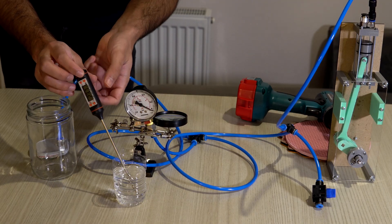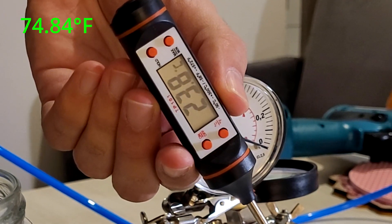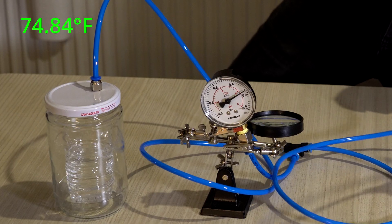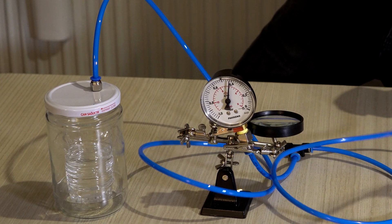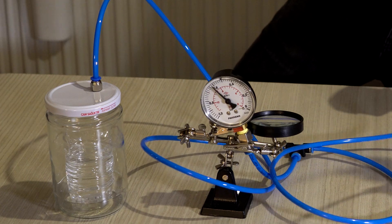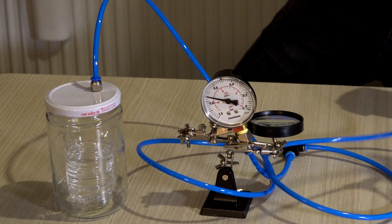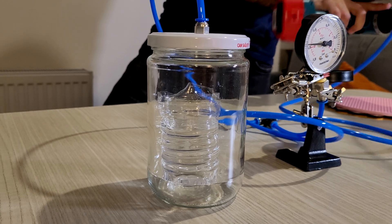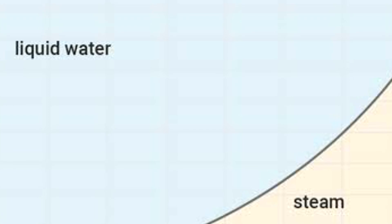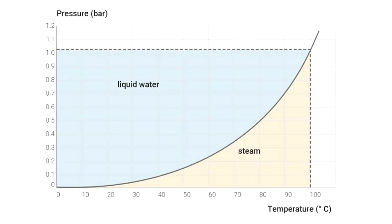It's now time for the final experiment — let's see if it can boil water at room temperature. Nothing happens, and I'm not surprised. According to graphs of boiling point versus pressure, the pump can't reach the vacuum necessary to boil water at room temperature. But we can see what temperature of water we can boil with the vacuum we can pull — it should be around 55 degrees.